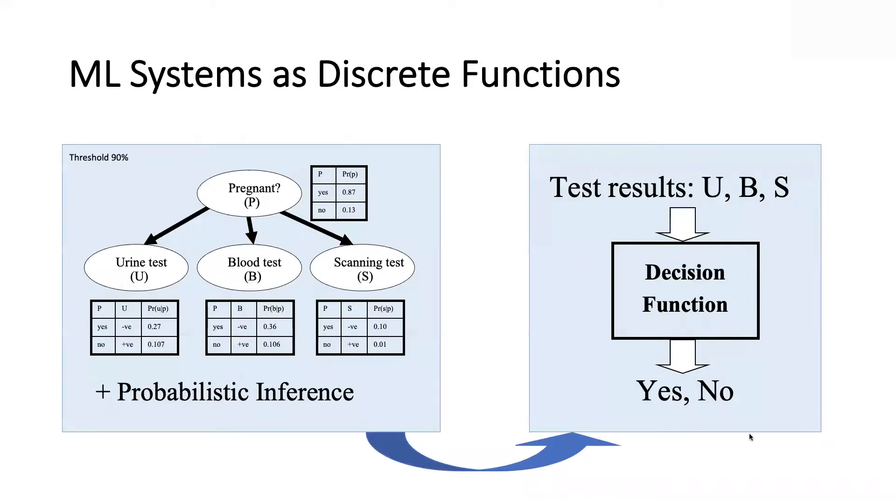So let's take a concrete example. What you have here on the left is one of the simplest machine learning systems you can have, a naive Bayes classifier. We have features and then we have a class variable. You give me an instance which fixes the value of these features, we compute the probability on the class variable, check against the threshold, and then render a decision.